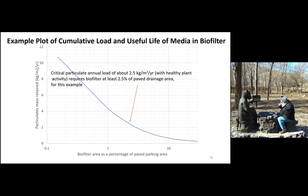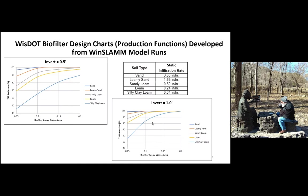Finally, a couple of examples for Wisconsin DOT — production functions developed for them based on their typical media and typical biofilter designs, looking at biofilter source area sizes as a function of different soils and different amounts of surface storage. Based on a specific design characteristic but changing the soils and volume of surface ponding, we can see that increased surface ponding substantially increased the amount of retention of particulate solids. These are the types of things we typically do with the model — long-term analyses evaluating biofilters at different sizes and for different designs.